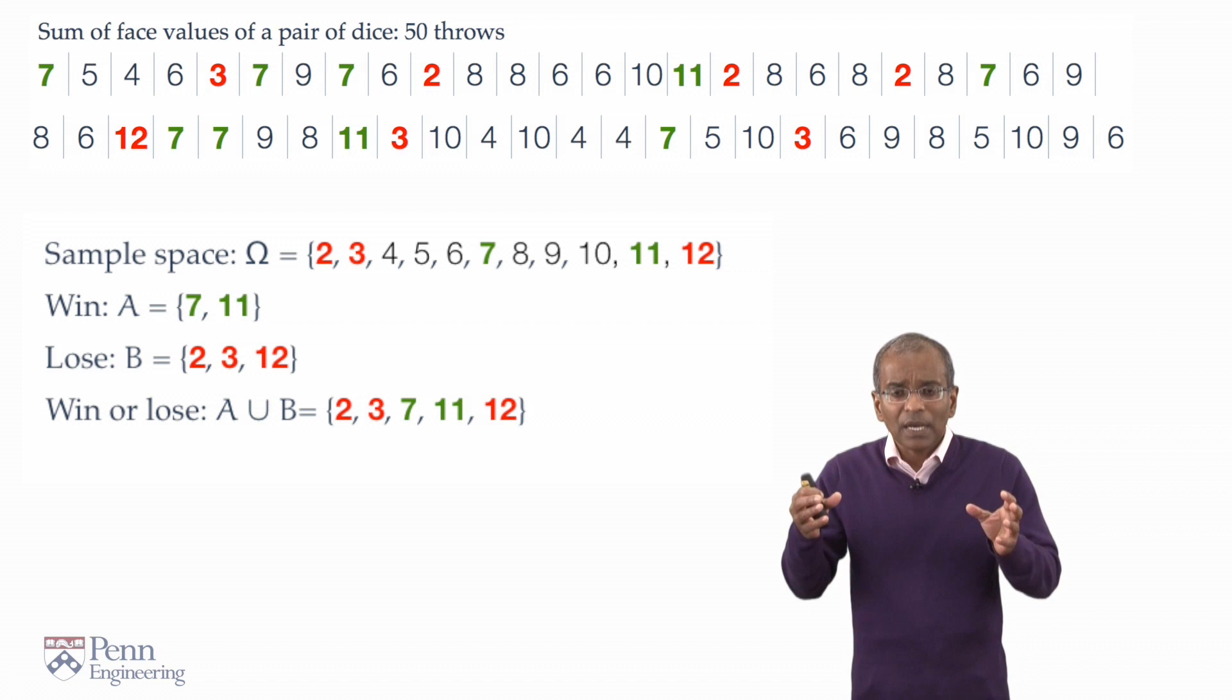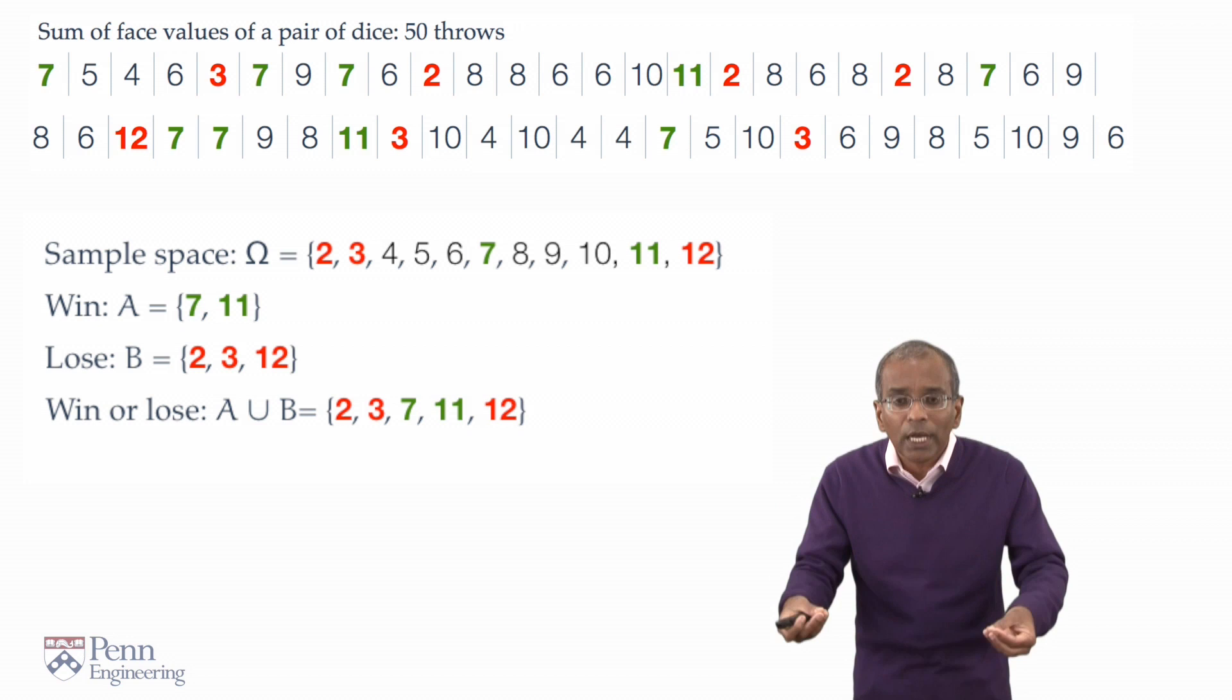Remember, the experiment is again just throwing a pair of dice once and summing the face values, and now we have 50 repetitions of this experiment. A natural way to ascribe chance to these events is to count and look at the relative frequency of times these events occurred in a long run of independent trials.